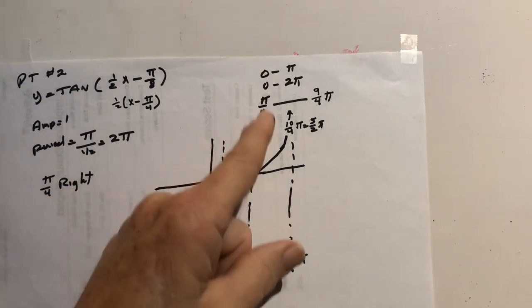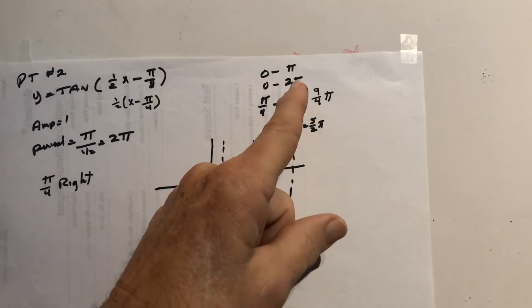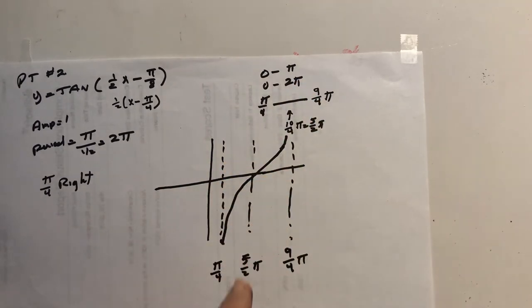So add pi over 4 to 0, add pi over 4 to 2 pi, and you get 9 fourths pi. So it's starting at pi over 4, ending at 9 fourths.